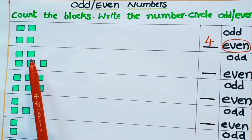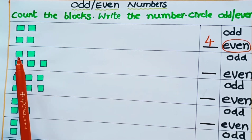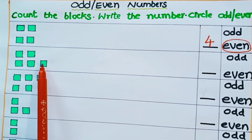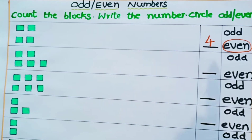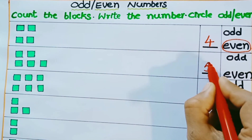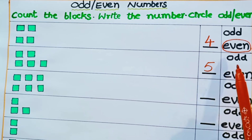Let us circle even. Now let us see the next row. How many blocks are here? 1, 2, 3, 4, 5. So one more block is present here. There are 5 blocks. Is 5 an odd or even number? It is an odd number.